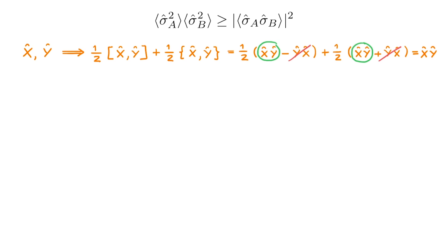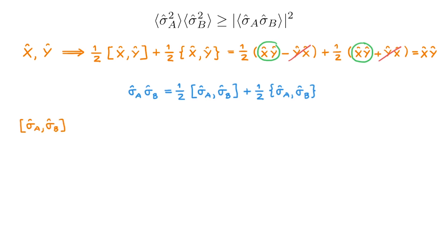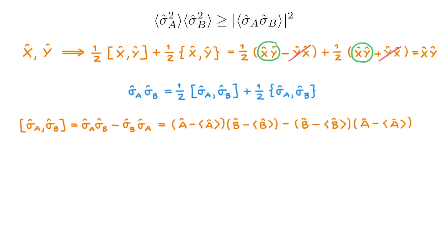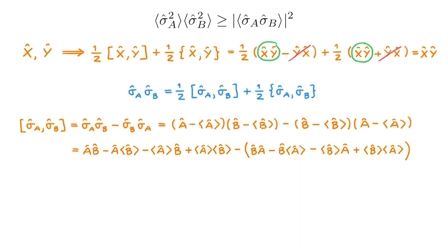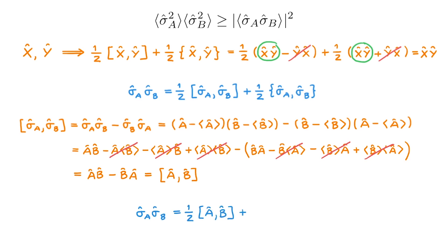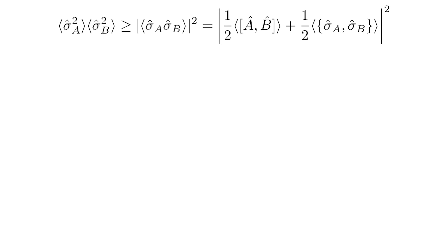This is a very useful result that we can use in our derivation. If we apply the identity to sigma A and sigma B instead of X and Y, we get the decomposition of sigma A times sigma B into one-half the commutator plus one-half the anticommutator. Considering the commutator of sigma A and sigma B explicitly and using the definitions of the sigma operators, multiplying through gives eight terms. After cancellations, we end up with AB minus BA, which is simply the commutator of A and B. This means we can write sigma A sigma B as equal to one-half times the commutator of A and B plus one-half the anticommutator.